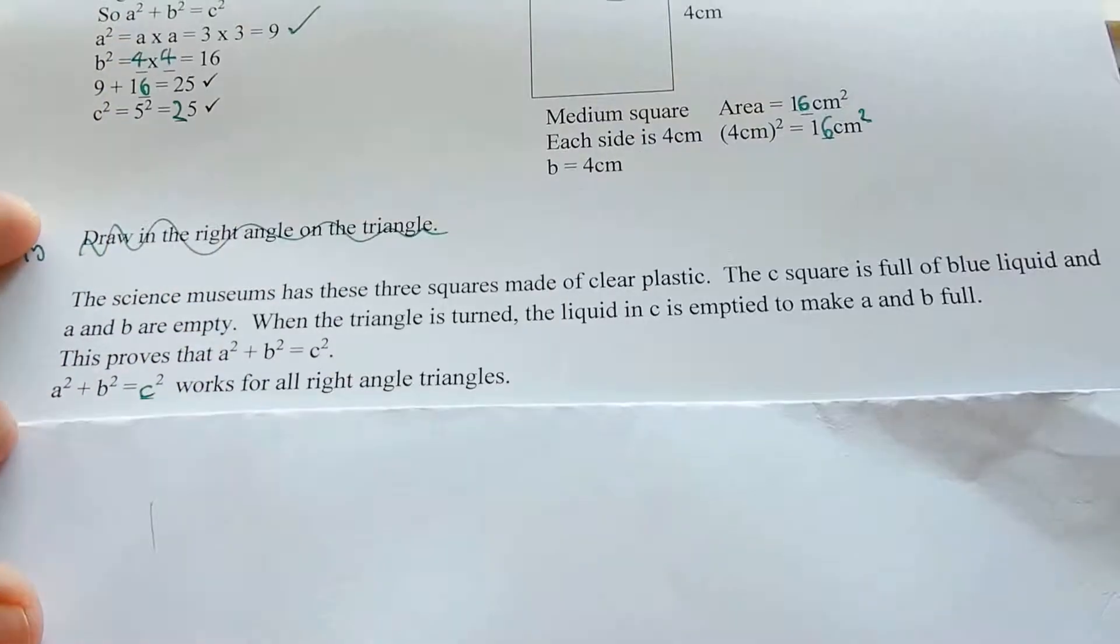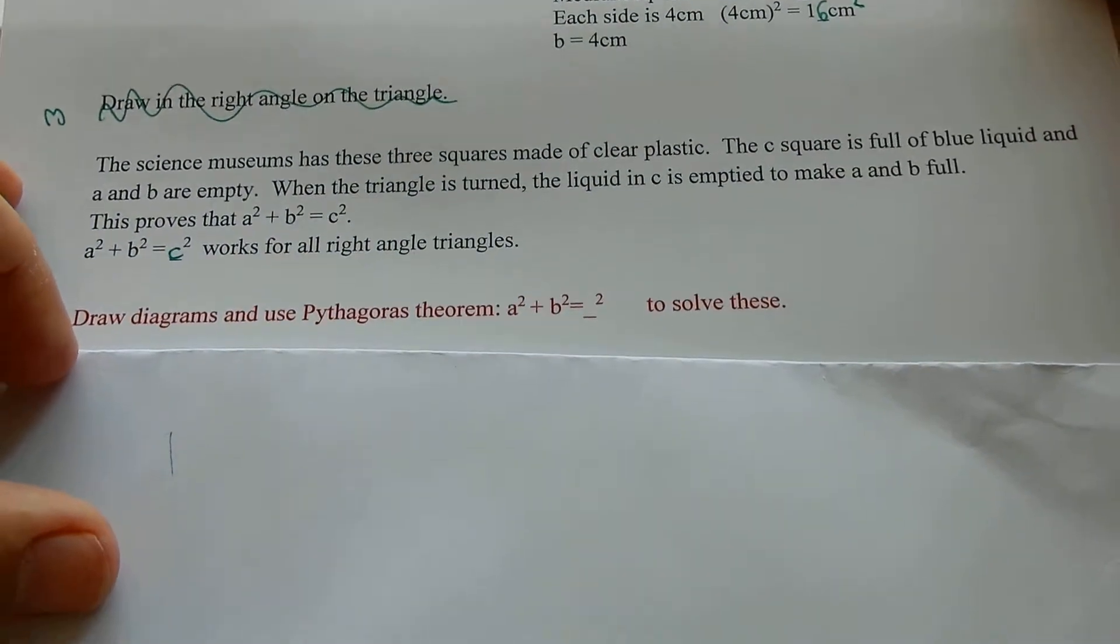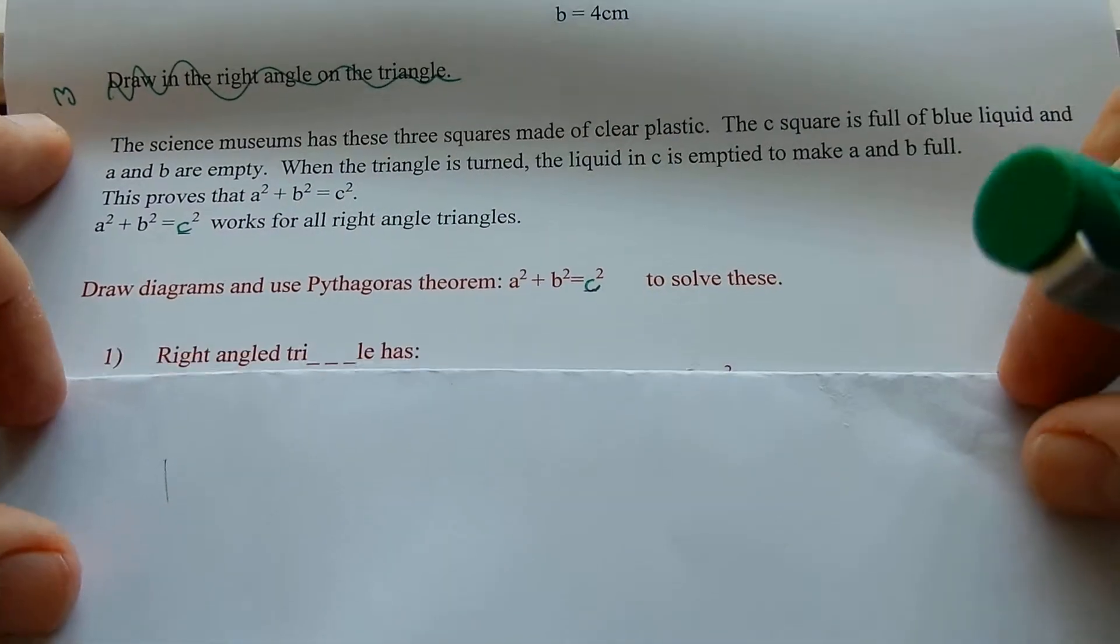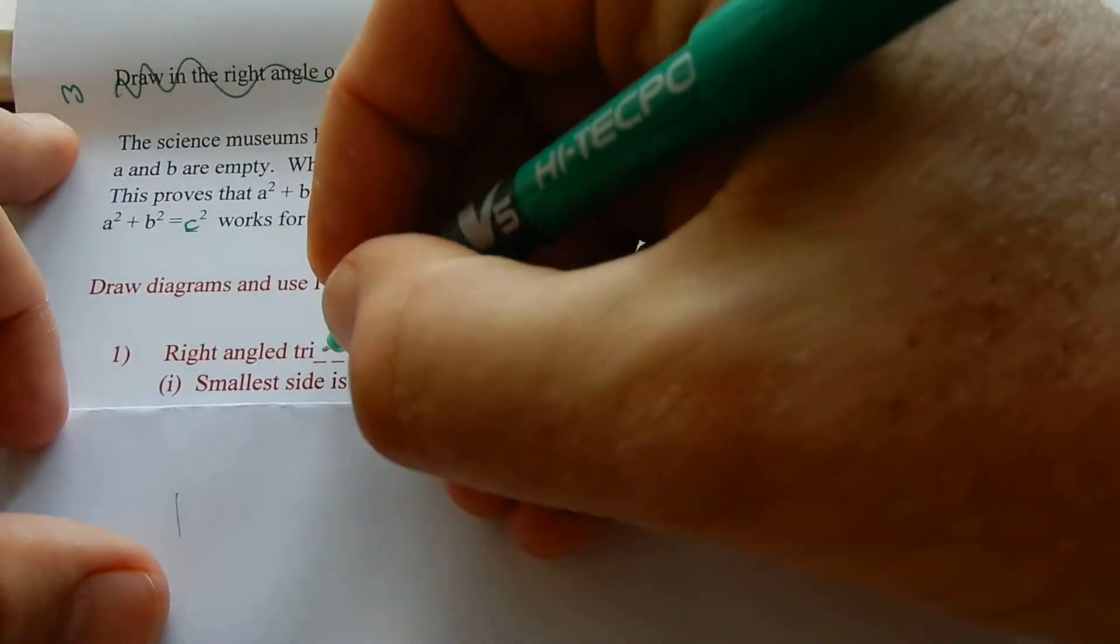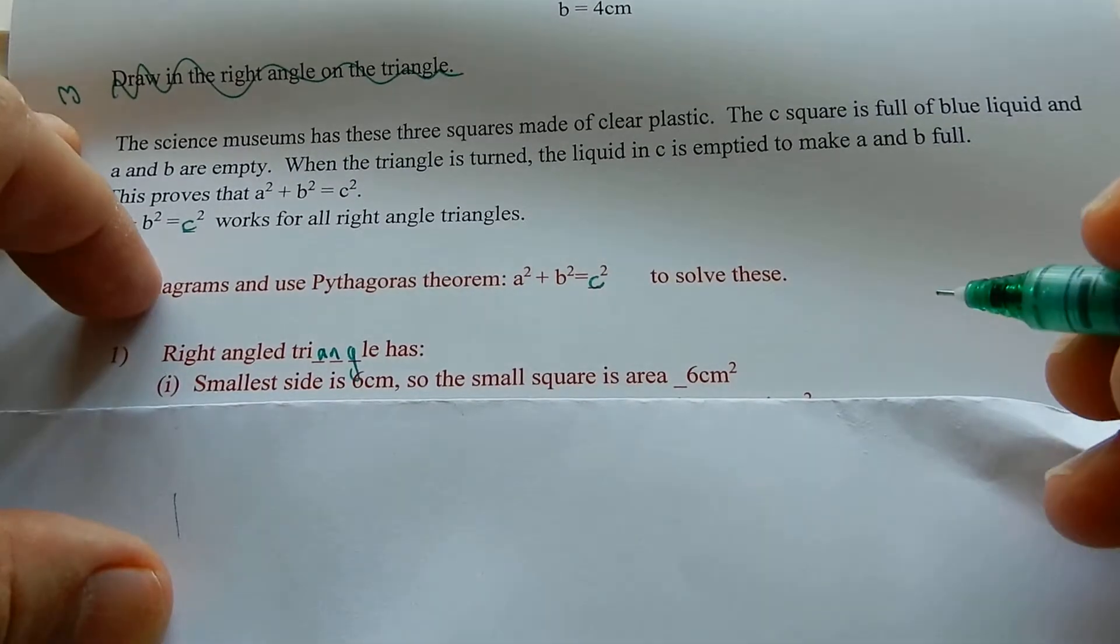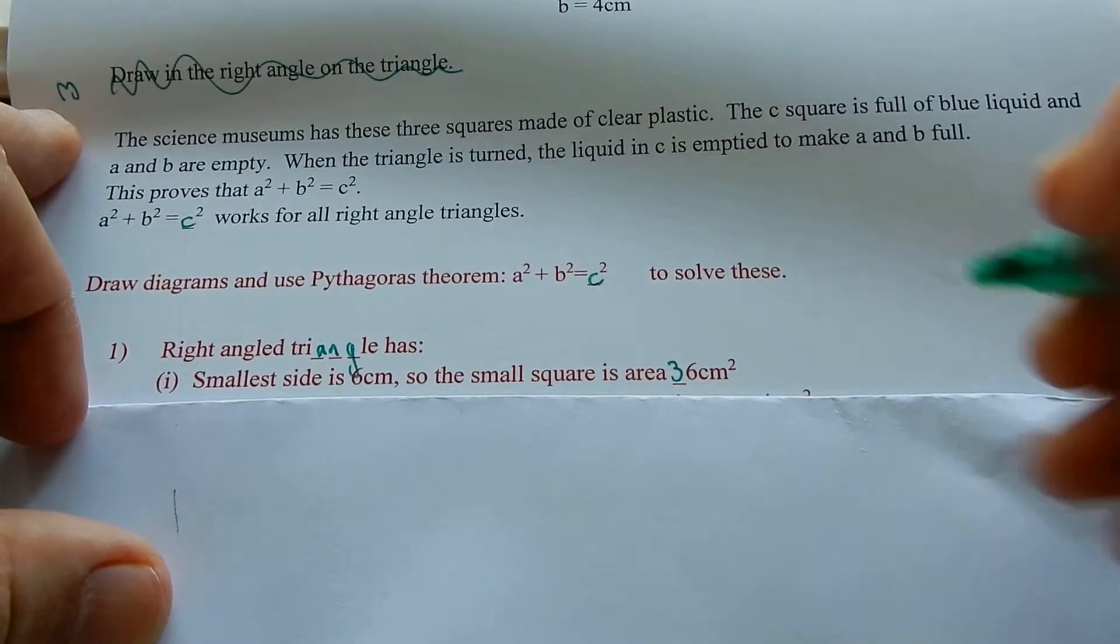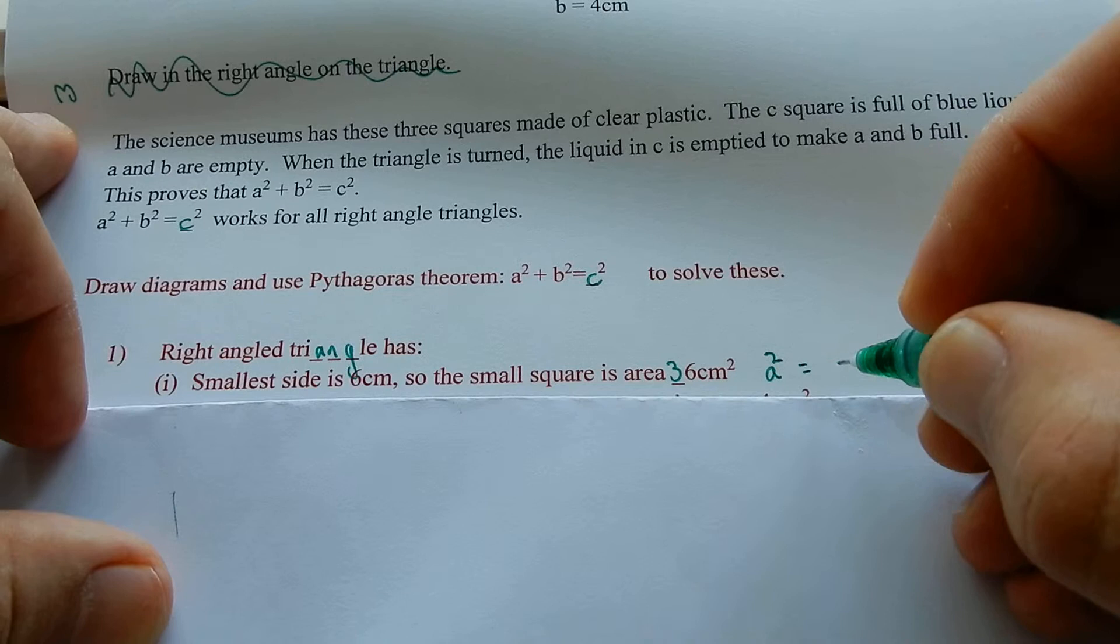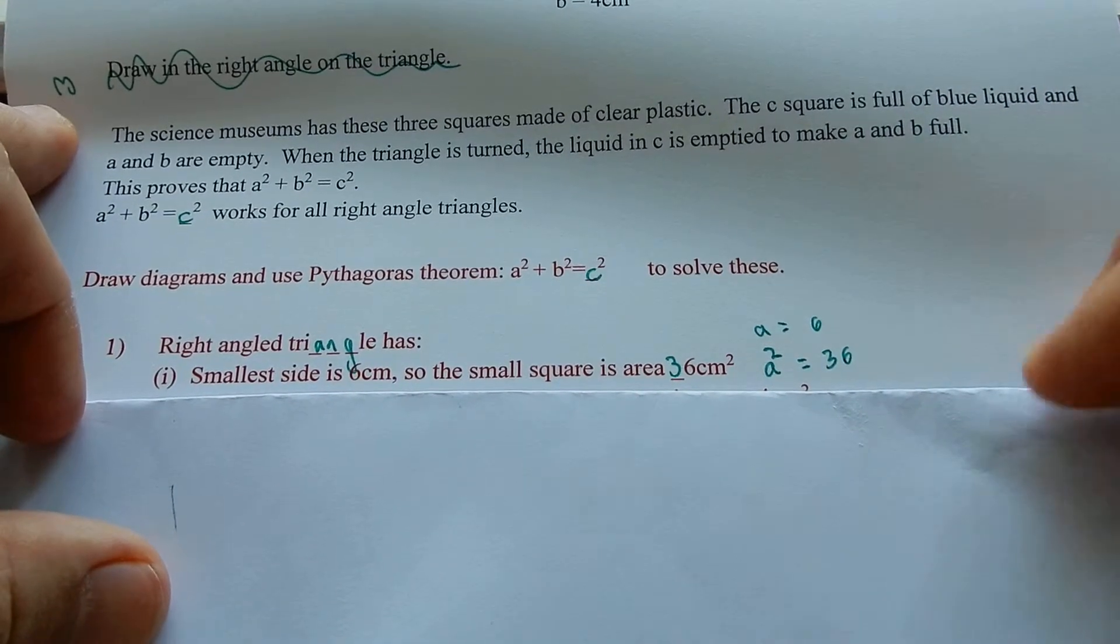C squared works for all right-angled triangles. Draw triangle diagrams and use Pythagoras' theorem, A squared plus B squared equals C squared to solve these. There's a right-angled triangle. It has smallest side six centimeters. So, the smallest side square is six times six, 36 centimeters squared. So, smallest side is A, A squared, A equals six. A squared is 36.